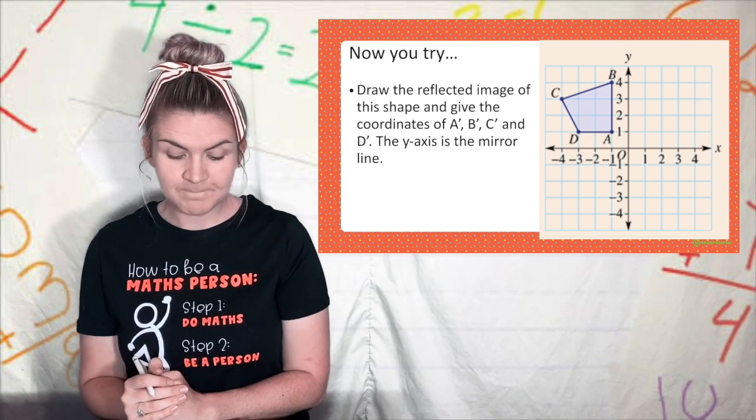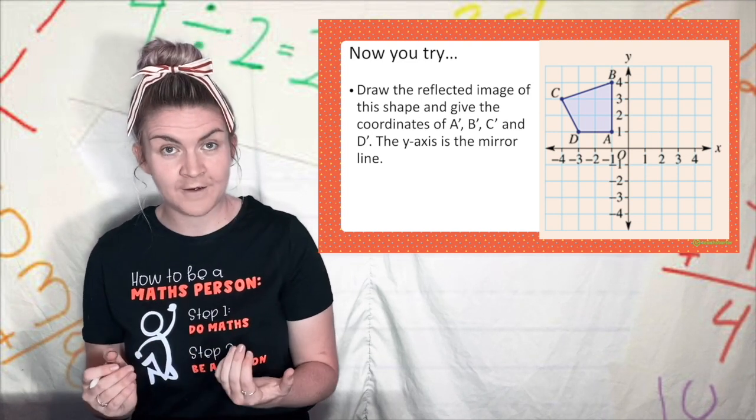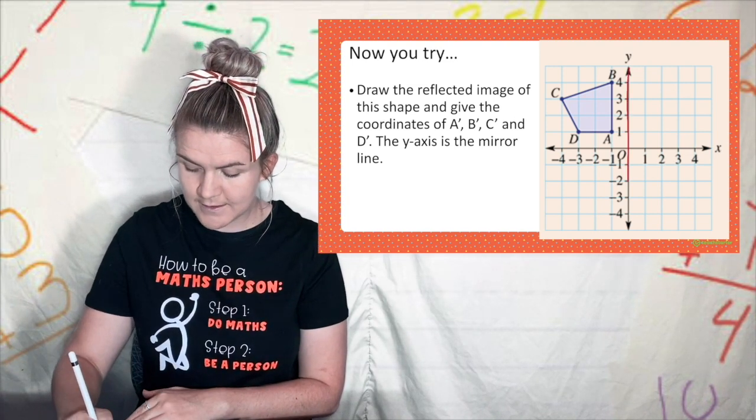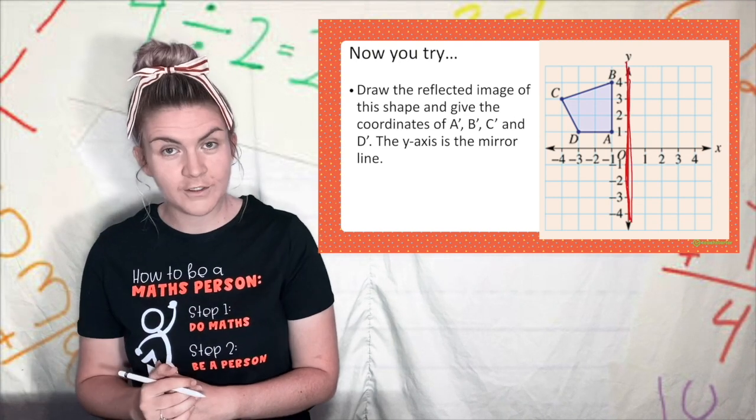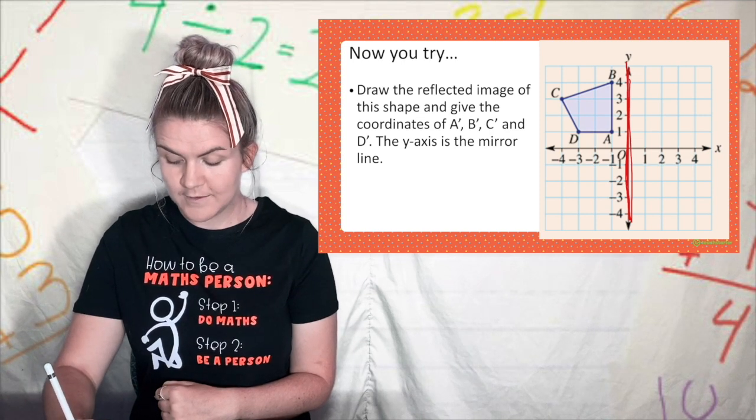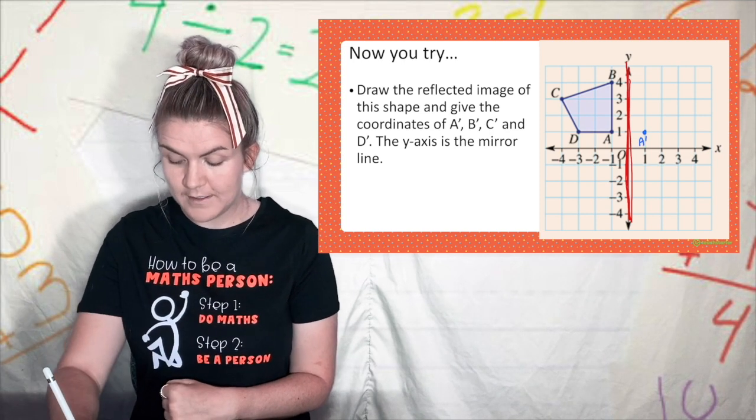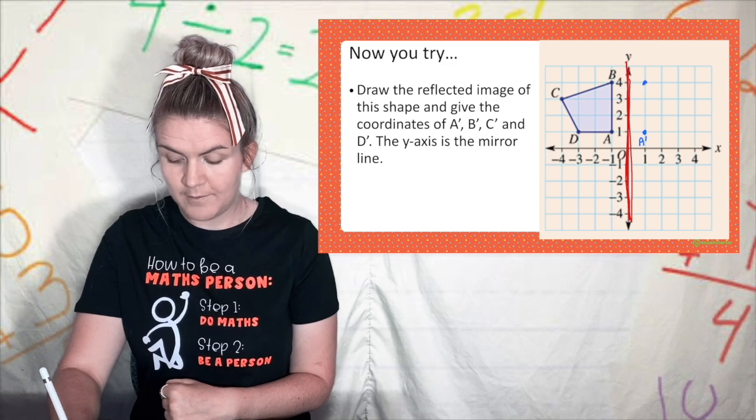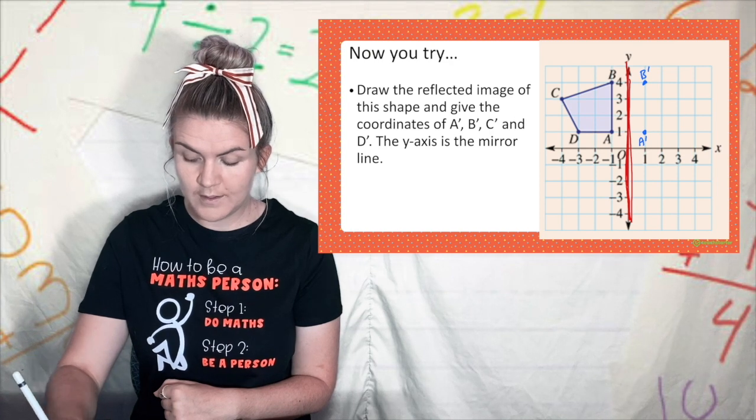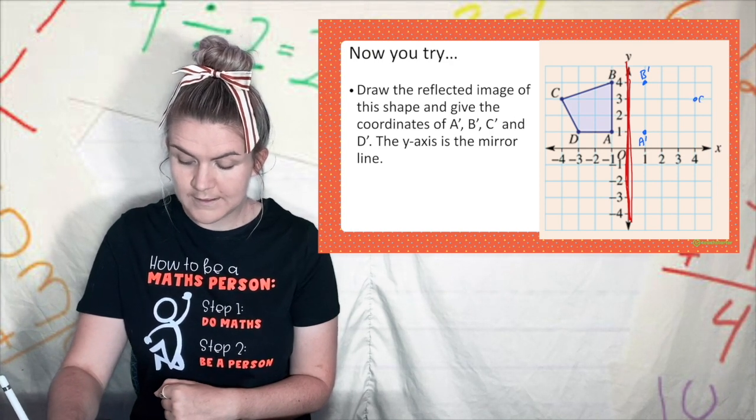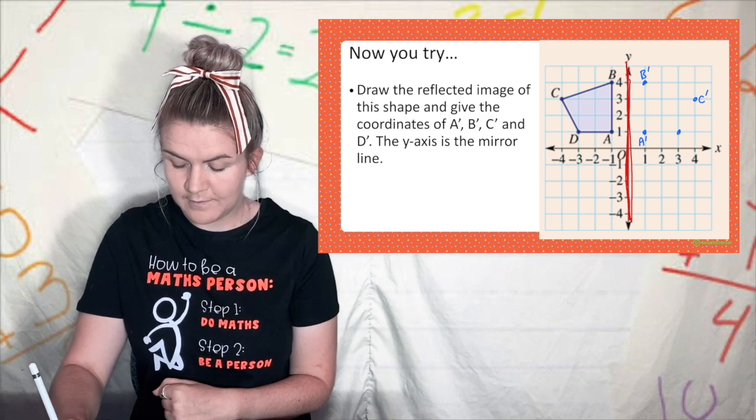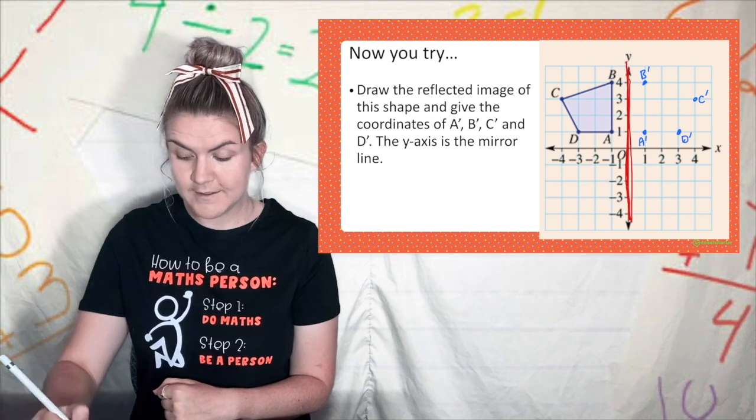You have a go at reflecting this shape. Let's check your answers. It says draw the reflected image of the shape and figure out the coordinates, the y-axis is the mirror line so I'm going to drag this as the y-axis is my mirror line. Now I'm going to do each point so if we start with a, a is one away so a prime is one away. B is one away so b prime one away. C, one, two, three, four, one, two, three, four, c prime. D, one, two, three, one, two, three, d prime. I've done all my letters so I'm going to connect them up.